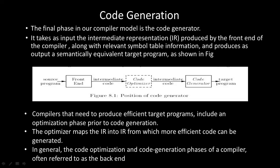The code generator is the final phase in the compiler model. It takes as input the intermediate representation (IR) produced by the front end of the compiler, along with symbol table information. Using these two components, it produces output that is semantically equivalent to the target program, converting IR plus symbol table into the target code.